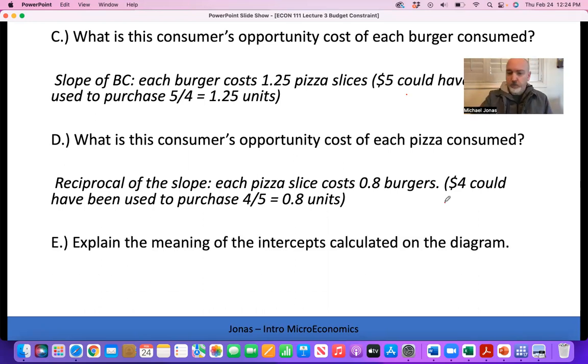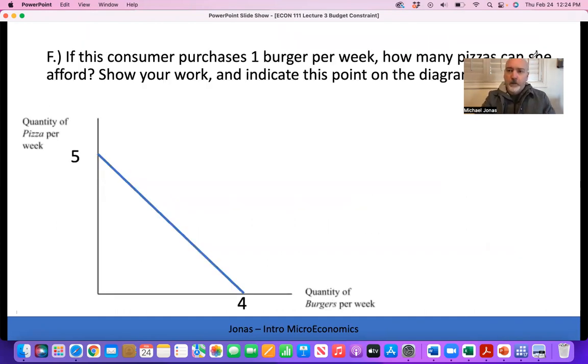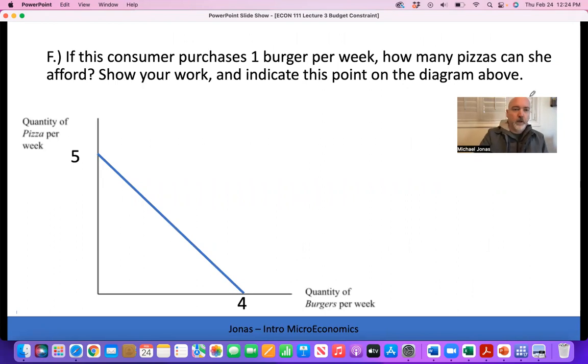We already did this, but be able to put it into words - explain the meaning of those intercepts we solved for. An intercept always gives us the maximum level of consumption in each good if the entire budget was spent on that good. Zero X, how much Y could we buy? Zero Y, how many X could we buy? Those are the intercepts, so maximum consumption.